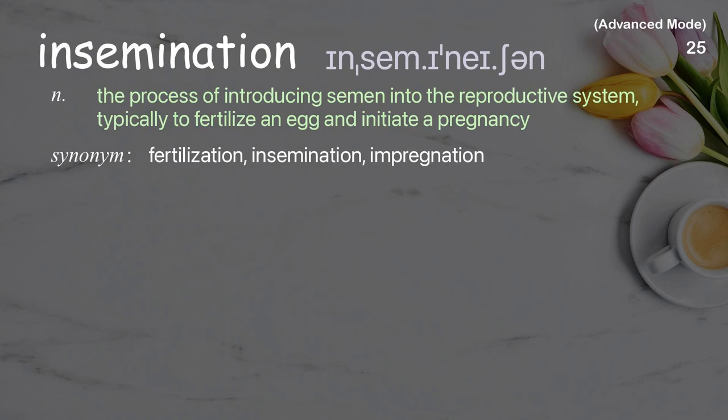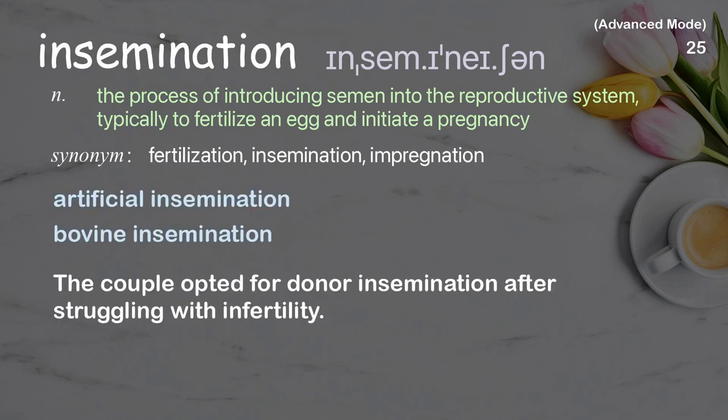Insemination: The process of introducing semen into the reproductive system, typically to fertilize an egg and initiate a pregnancy. Examples: artificial insemination, bovine insemination. The couple opted for donor insemination after struggling with infertility.